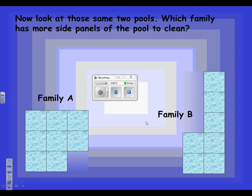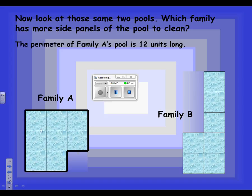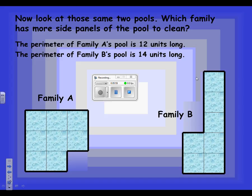Now let's look at those same two pools. Which family has more side panels of the pool to clean? The perimeter of Family A's pool is 12 units long. The perimeter of Family B's pool is 14 units long.